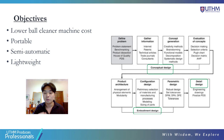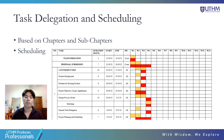To help us achieve our objectives, we shall use the design process where the conceptual design, embodiment design, and detail design are taken into account. For our project, we shall be delegating tasks based on chapters and sub-chapters, and scheduling will be done using a Gantt chart. That is all from our introduction. Thank you very much.